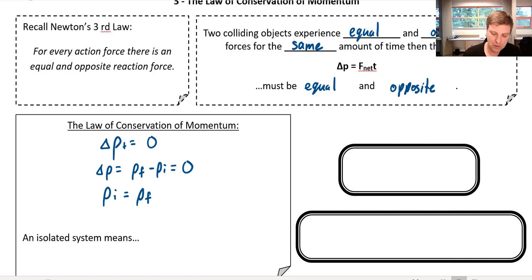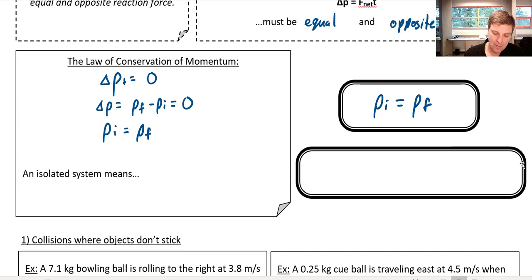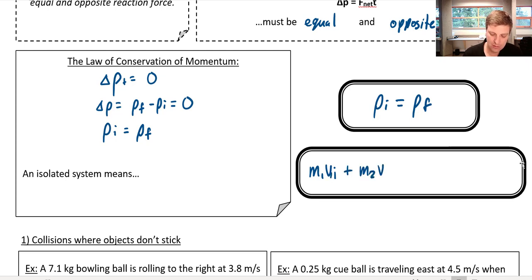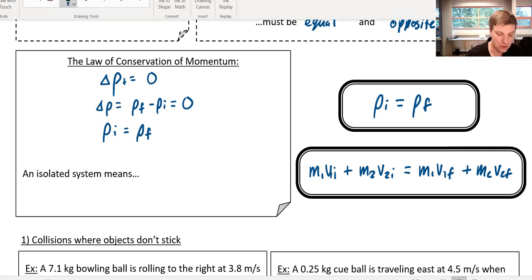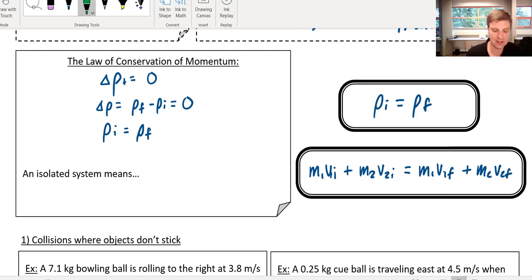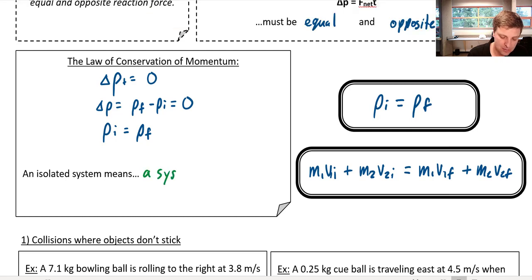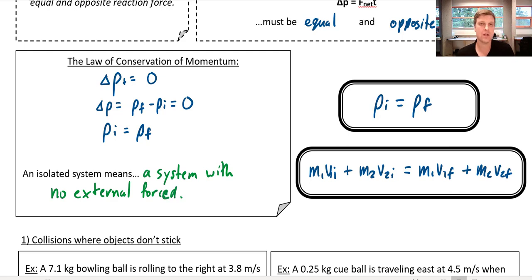Starting with the premise that initial momentum has to equal final momentum, we can expand this: m1·v1_initial plus m2·v2_initial equals m1·v1_final plus m2·v2_final. By isolated system we mean a system with no external forces. So if we're only worried about the forces that the two objects exert on each other, then our momentum is conserved.